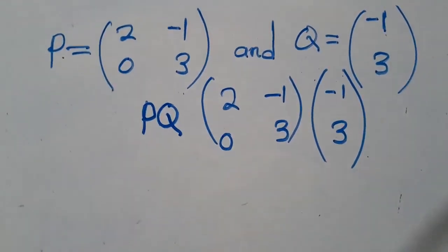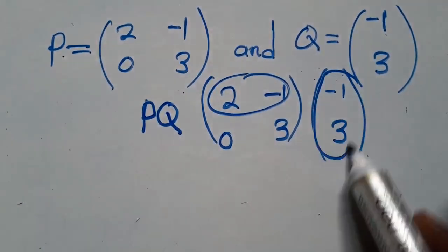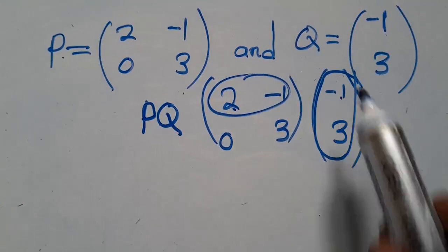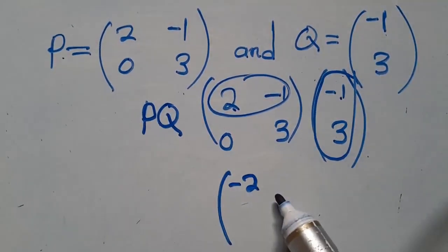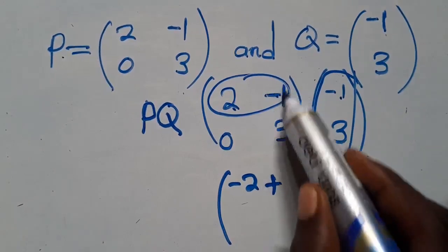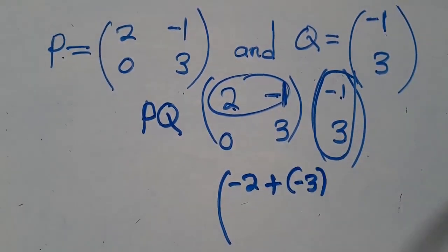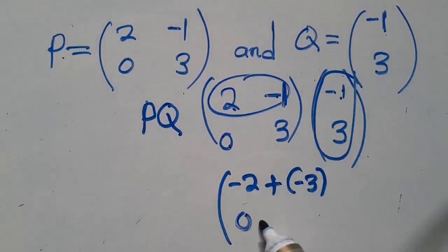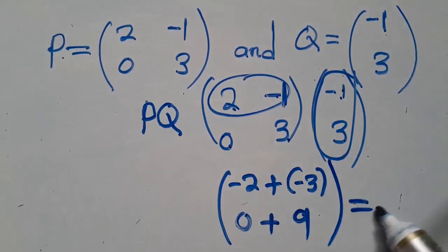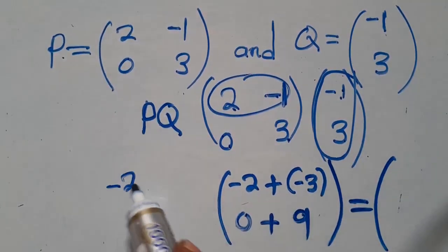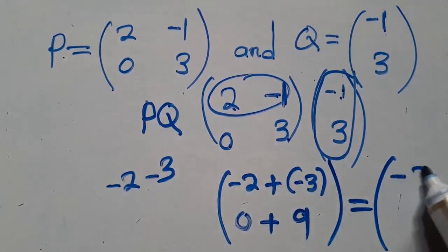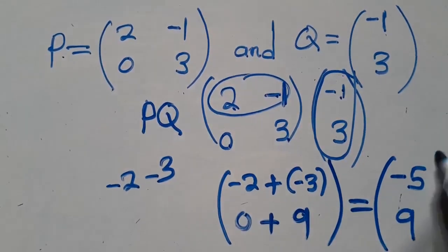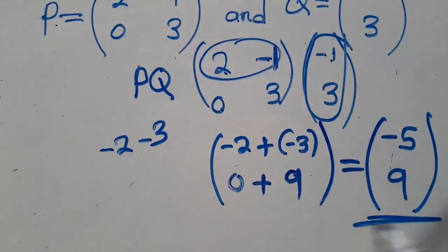Start the multiplication. First row times the column: 2 times negative 1 is negative 2, plus negative 1 times 3 is negative 3. Go down to the second row: 0 times negative 1 is 0, plus 3 times 3 is 9. Adding up: negative 2 minus 3 is negative 5. So your answer is [negative 5; 9]. This is our final answer for that question.